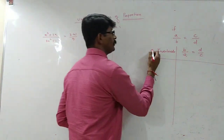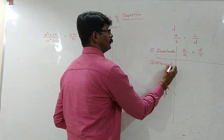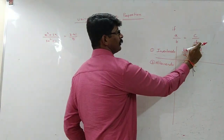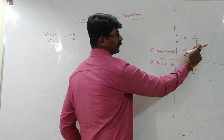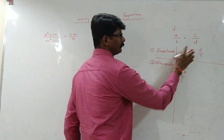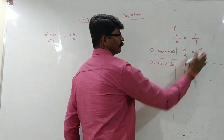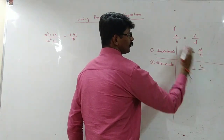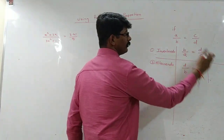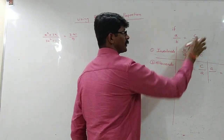Then Alternendo. What is Alternendo? We alter the places. A will go in the place of D, and D will go in the place of A, giving D upon B equals C upon A. Or it can be done vice versa — A and D will be at one position, and B and C will get interchanged.